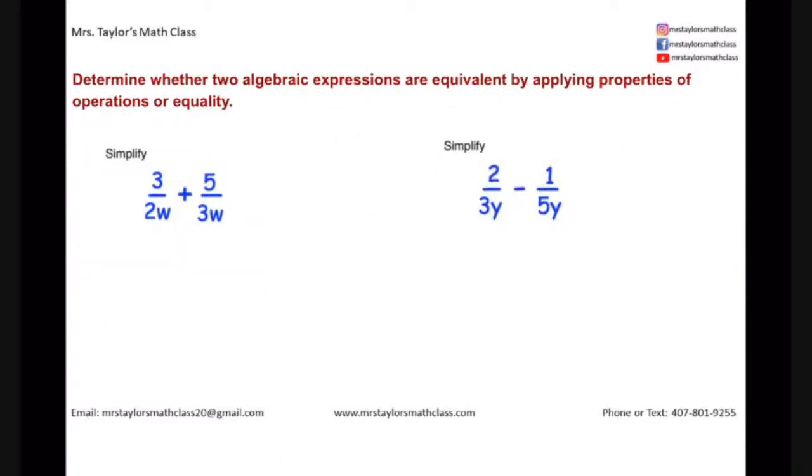So, the first question, it's probably simpler than what they would actually test you on, but this gives you an idea what you will see. It's determine whether two algebraic expressions are equivalent by applying properties of operations or equality. Now, when you're taking the GK math test, you're going to have multiple choices, four choices. You have to be able to match the expression to whatever are in your answer choices. So, here I'm just going to show you how to rewrite this current expression so you can see how it would look differently.